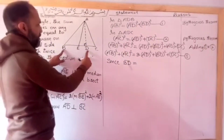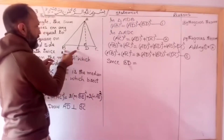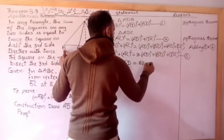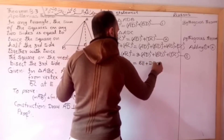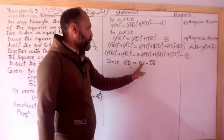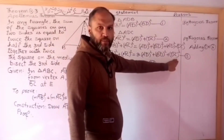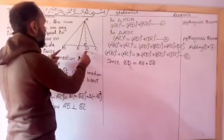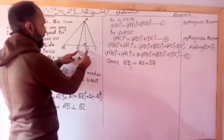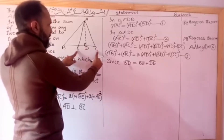Now BD equals BE plus ED, that is equation 4. And DC equals EC minus ED, that is equation 5. Since E is the midpoint of BC, EC equals BE.